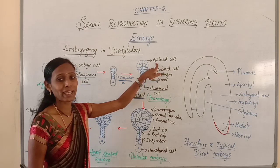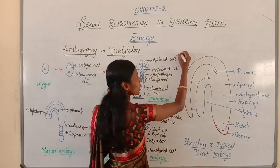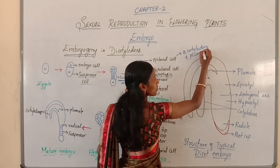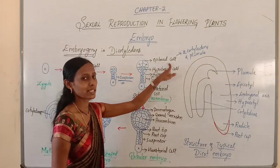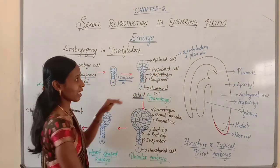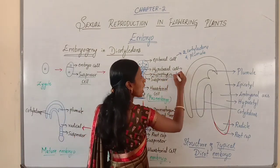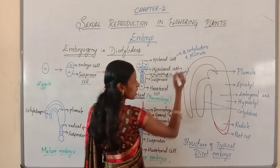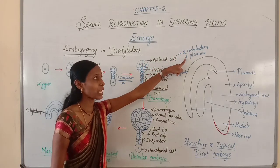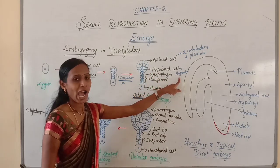The epibasal cells, which are the terminal cells, later develop into two cotyledons and plumule — including the epicotyl. The hypobasal cells, which are very near to the suspensor, later develop into the hypocotyl.